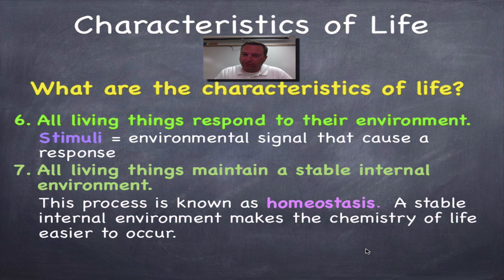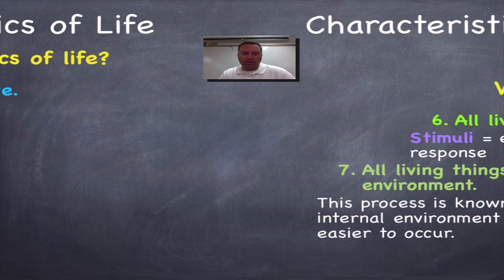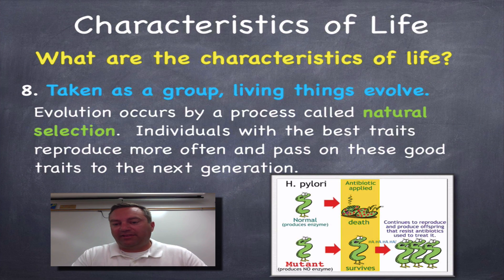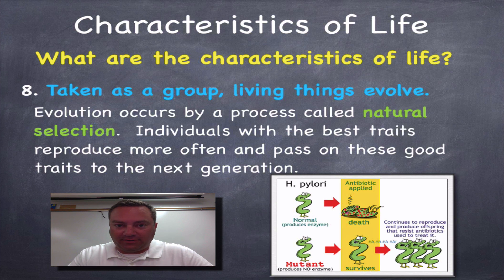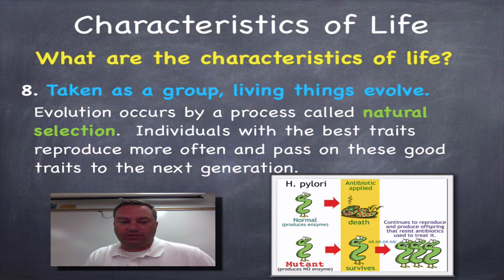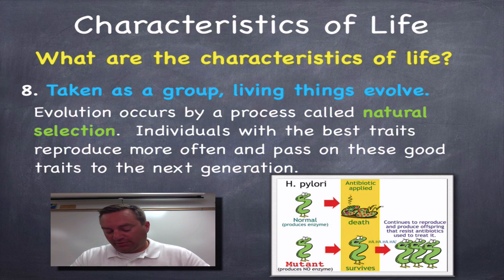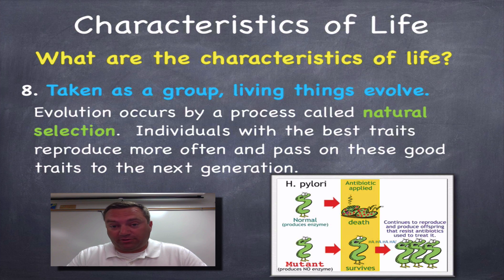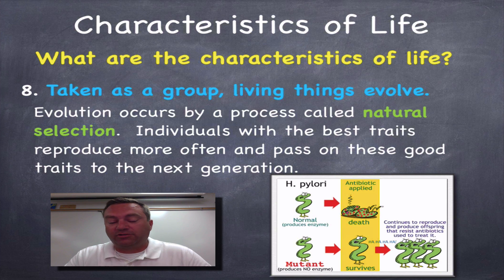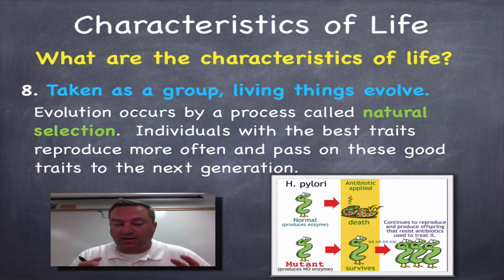Finally, taken as a group, living things evolve. It's not possible for individuals to evolve — a population of living things evolves over time, which we'll cover in chapters 15 and 16. Natural selection is the process through which living things evolve: certain individuals have better traits, those traits allow them to survive and reproduce more often, they pass those traits to offspring, and over time more individuals have those traits — and voilà, they've evolved.